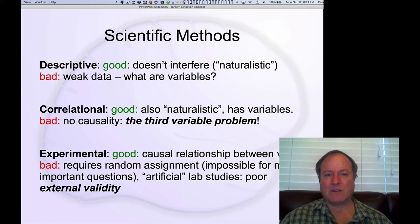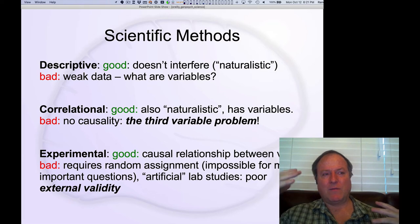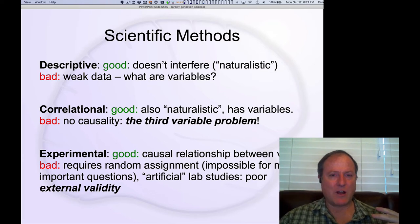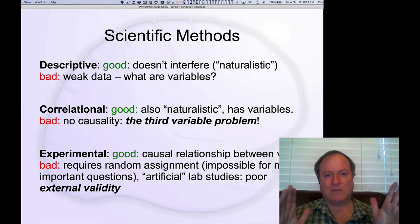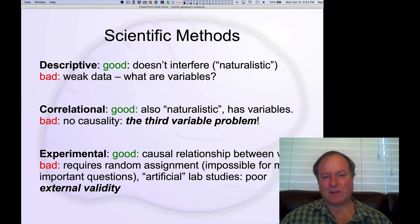And this is also known as the third variable problem, which basically says that that correlation that you're observing could be due to some other additional variable that you're not measuring, which is actually giving rise to these two variables that you are measuring, and that that's actually driving the relationship, and that the individual variables themselves have no actual causal relationship. So we'll unpack that and look at that in a sec.